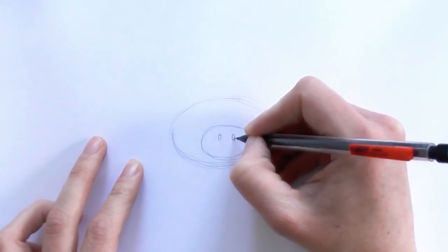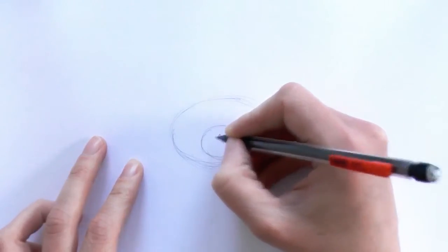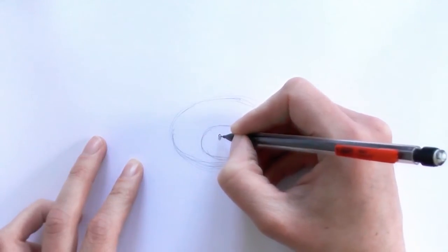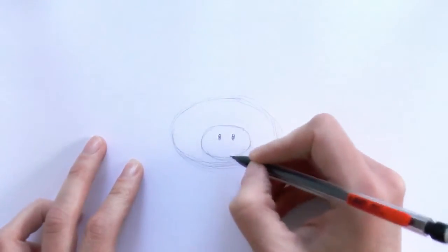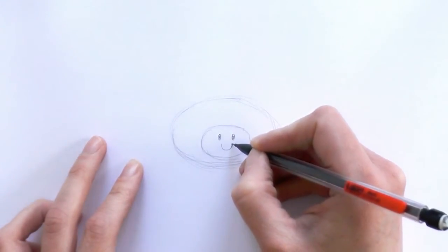and another one there for another eye. We just draw a little circle in there for the highlight of the eye, and then we draw a half circle for a smile,